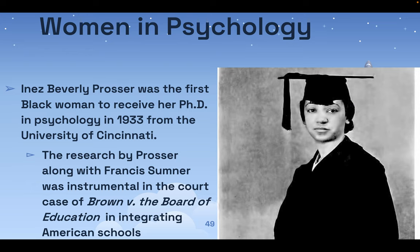Inez Beverly Prosser was the first black woman to receive her PhD in psychology in 1933 from the University of Cincinnati. The research by Prosser and Sumner was instrumental in the court case of Brown versus the Board of Education in integrating American schools. Prior to the 1950s, the idea was that Black people were not as intelligent as white people — that was used to rationalize separate schooling. The research by Prosser and Sumner proved that this was a totally erroneous idea with no basis in fact.